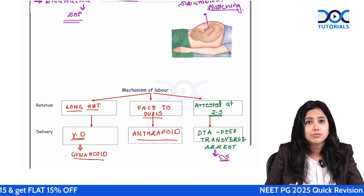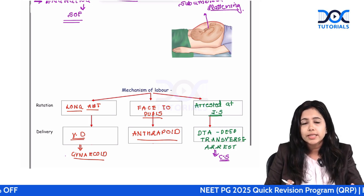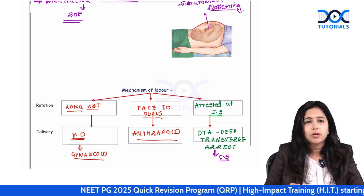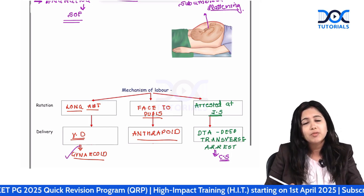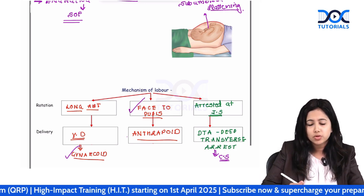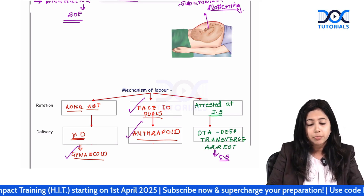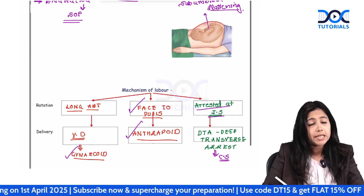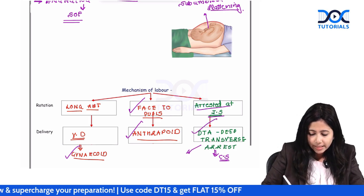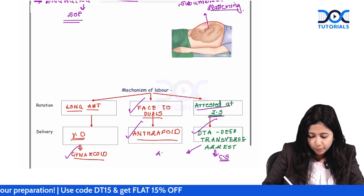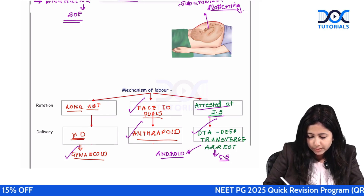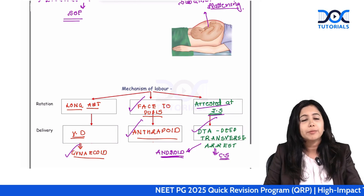So these are the possible mechanisms of labour. Mostly they will rotate anteriorly and deliver as a normal vaginal delivery, often seen with gynecoid type of pelvis. Or they can deliver as face-to-pubes delivery after short posterior rotation, seen in anthropoid type of pelvis. Deep transverse arrest is associated with android type of pelvis.